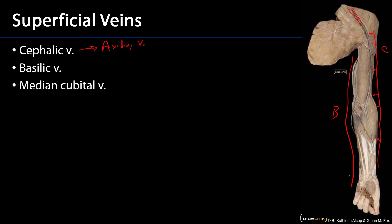The basilic vein drains the medial upper limb and it dives deep and is going to become the axillary vein, but it's going to be joined by the venae comitantes of the brachial artery, which are the brachial veins. So, basilic vein plus brachial veins becomes the axillary vein.